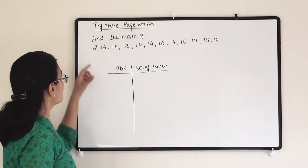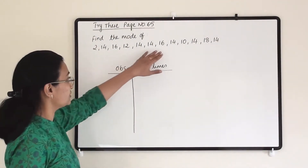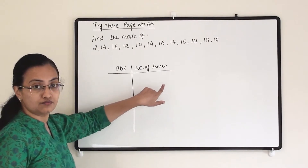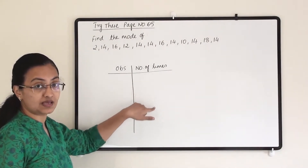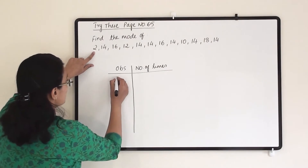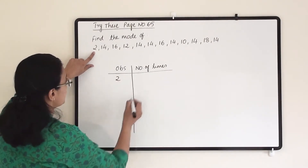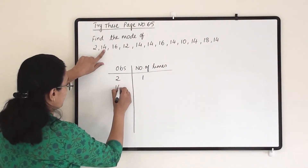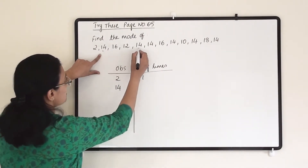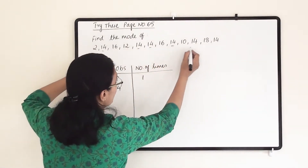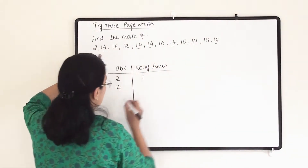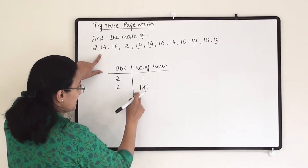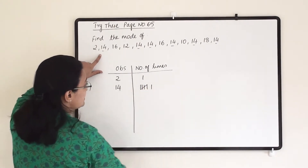Our second problem: we have to find the mode for this data. Let us check how many observations there are and which number is appearing multiple times. The number 2 is coming only once. Then 14 — how many times is it coming? Once, twice, thrice, four times, fifth time, and six times. So we write tally marks: one, two, three, four, then a cross for five, and then six times. So 14 is coming six times.